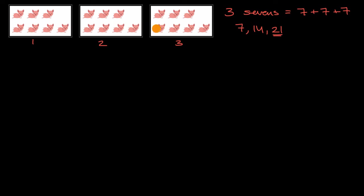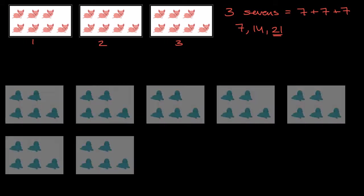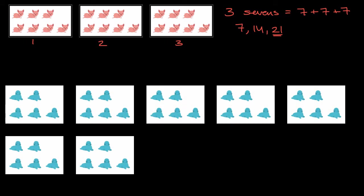So there are 21 pigs here, and you can verify on your own that if you count them, you will indeed see 21 pigs. Let's do another example. Here I'm looking at a picture of a bunch of blue seals — not something that you are likely to see in the wild.